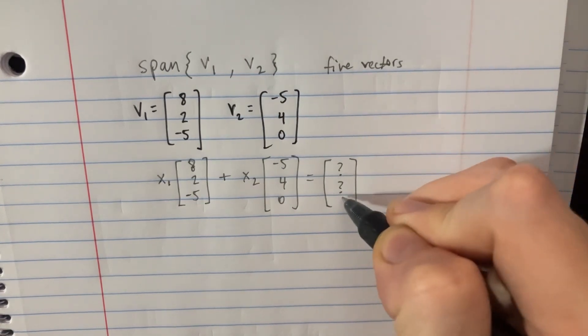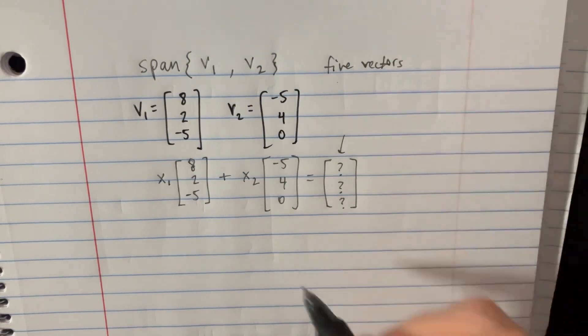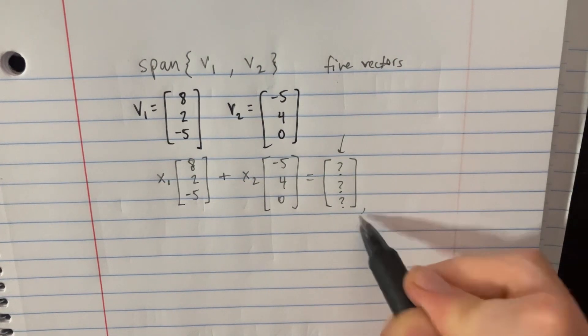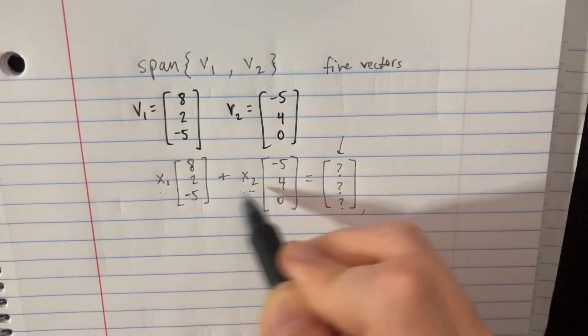So this is the span here. This is one of the five vectors, and there could be many answers here depending on what coefficients you put over here, right?